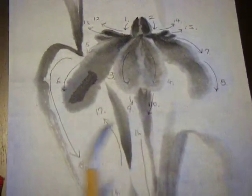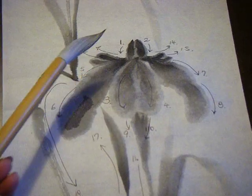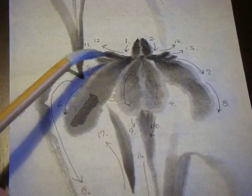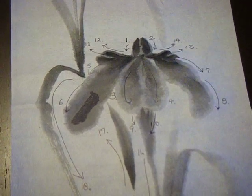And then you can do some ornamentation up here, just with a little bit of black ink on the fine point. Twelve and thirteen. And the other side, fourteen and fifteen.